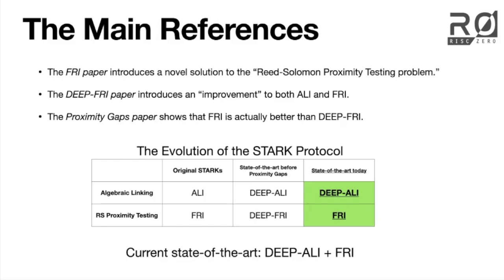There are two different versions: the without-deep version and the with-deep version. DEEP stands for Degree Extension for the Elimination of Pretenders. When STARKs were originally created there was no DEEP yet — it was ALIE and FRI. Then a year or two later the DEEP technique was invented, and people were running STARKs using deep-ALIE and deep-FRI. Then the proximity gaps paper showed that DEEP is not actually an improvement over the original FRI. So where we are today is that we use the DEEP version of the algebraic linking protocol, but we don't bother with DEEP on the FRI protocol.